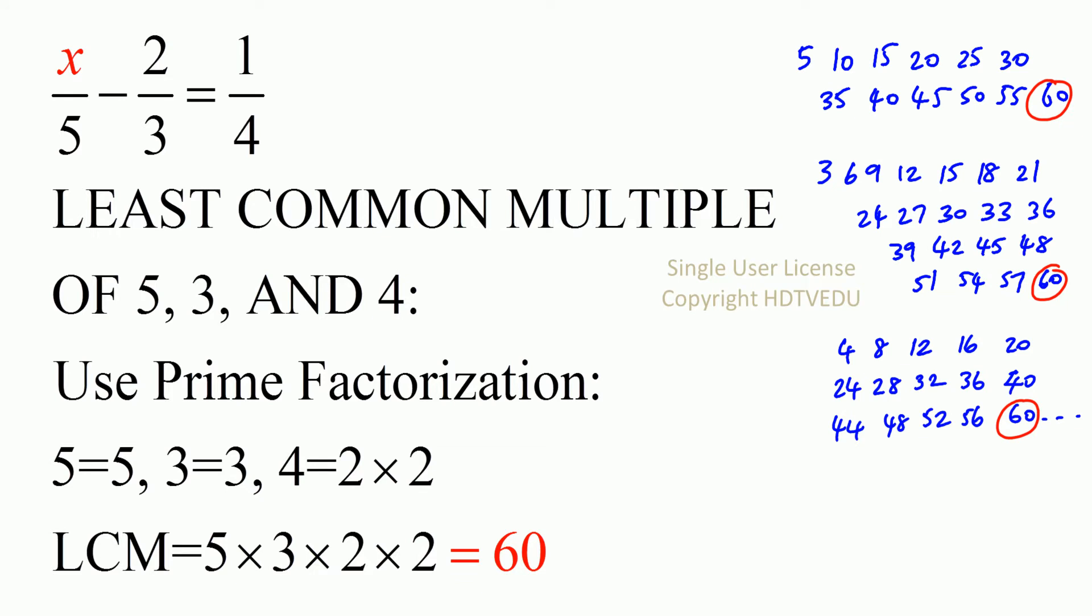So get multiples of 5, get multiples of 3, get multiples of 4, and then look for the common numbers. And between the common numbers, look for the least of the common multiples. And what do we have? 60.